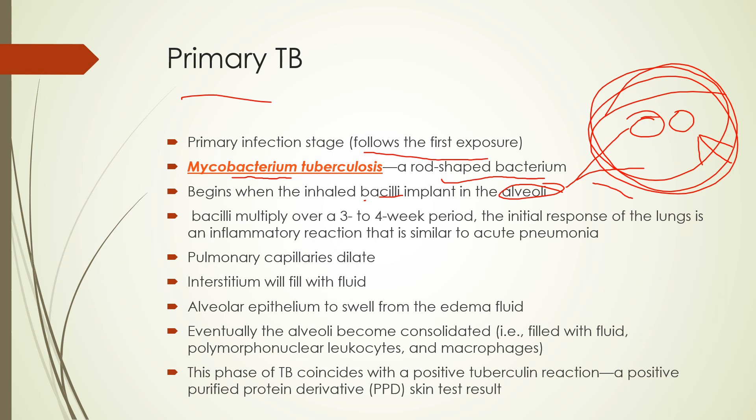TB usually first shows cavitations in the apical region and can then spread throughout the lung tissue. Over a three to four week period, the lungs will inflame. Capillaries dilate in response to inflammation and the interstitium fills with fluid — all pneumonia-like responses. A person might initially think they just have a walking pneumonia. The alveoli tissue will start to swell and fill with fluid.